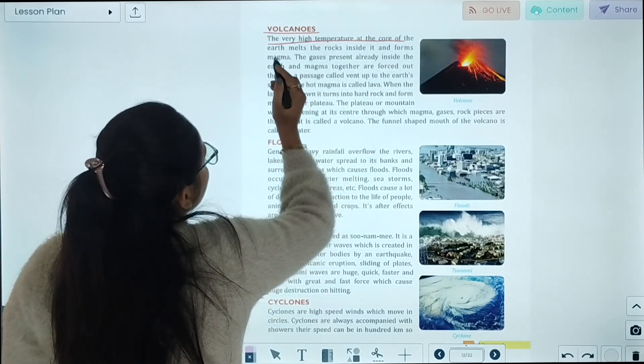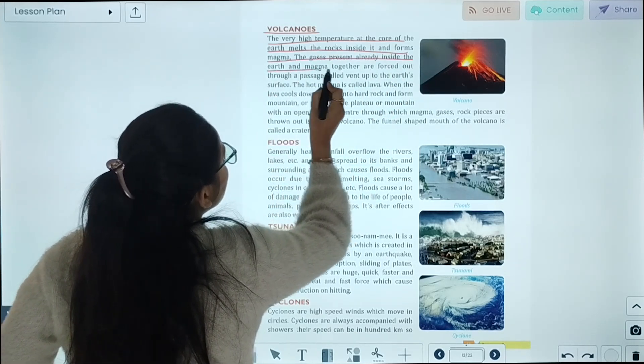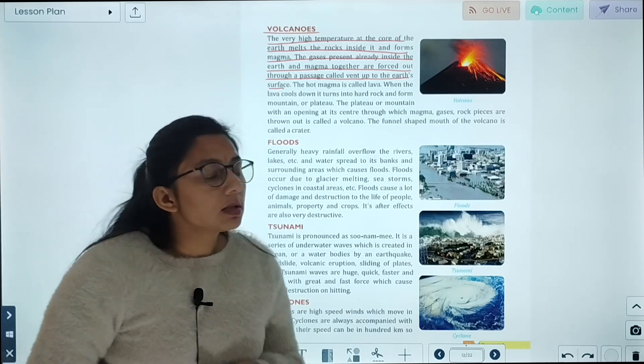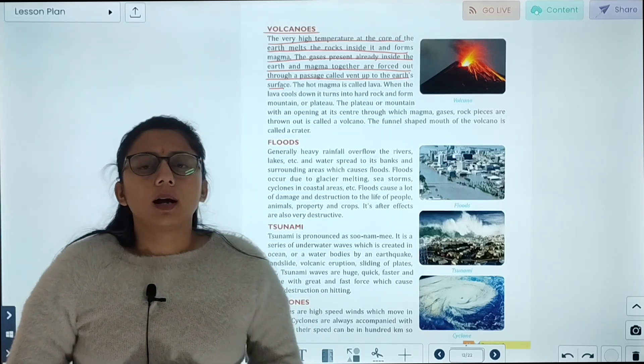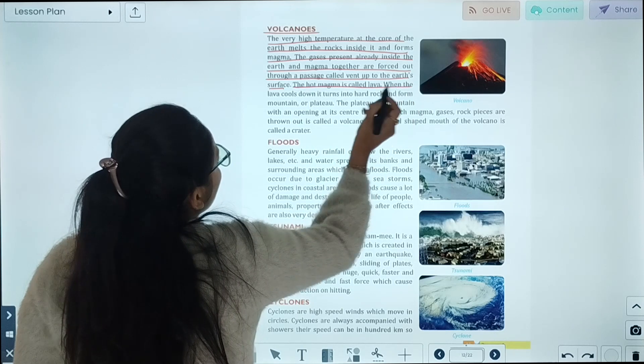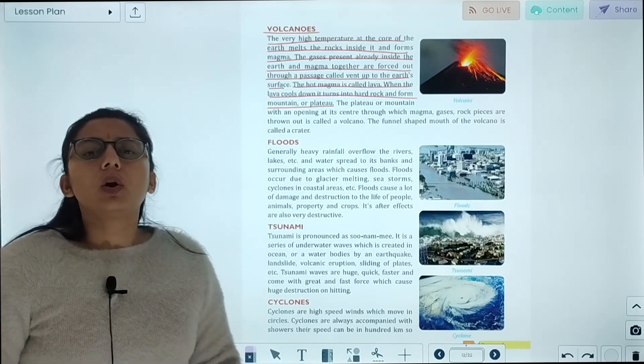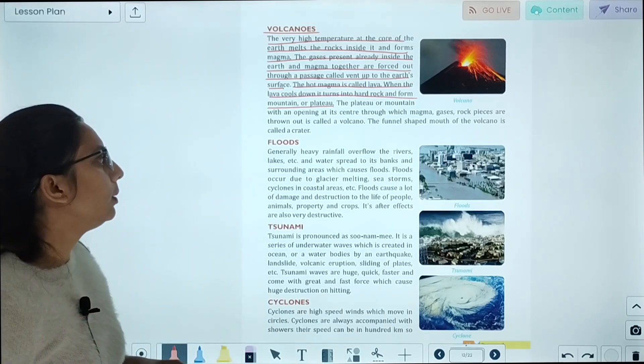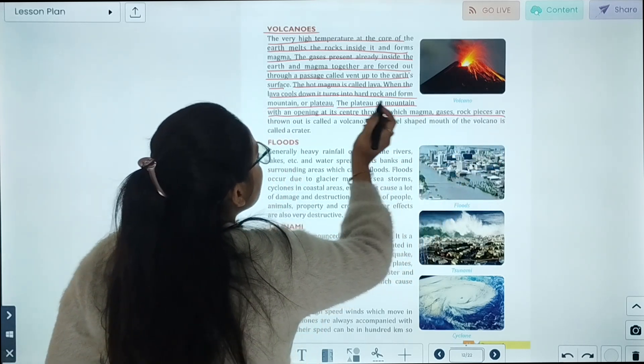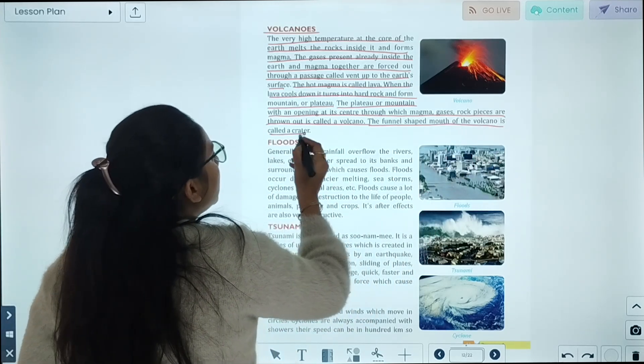Volcanoes. The high temperature at the core of the Earth melts the rocks inside it and forms magma. The gases present inside the Earth and magma together are forced out through a passage called vent to the Earth's surface. The hot magma is called lava. When the lava cools down, it turns into hard rock and forms mountains and plateaus, which we call volcanic mountains. The opening at its center through which magma, gas, and rock pieces are thrown out is called volcano. The funnel-shaped mouth of the volcano is called crater.